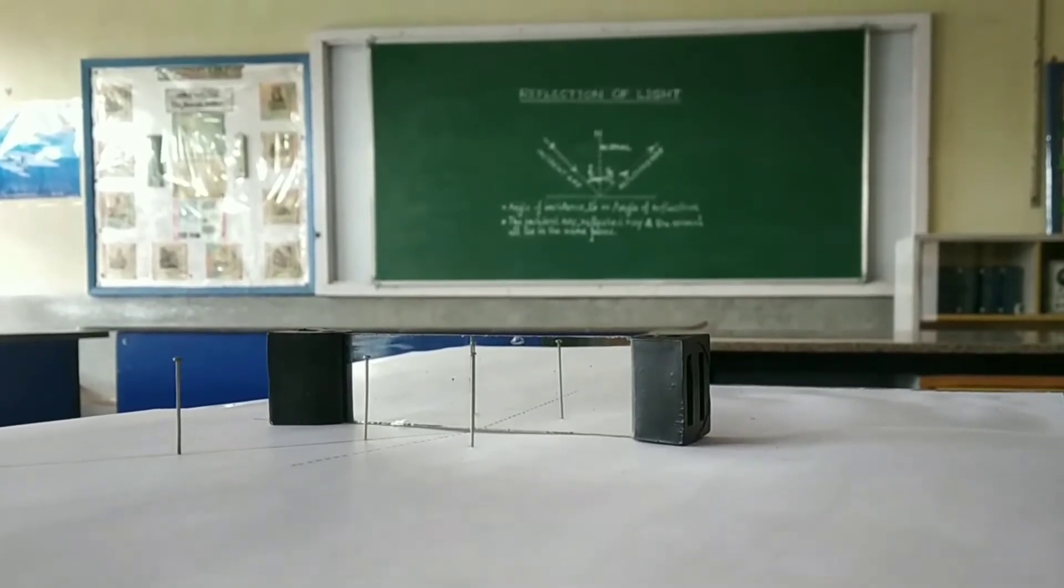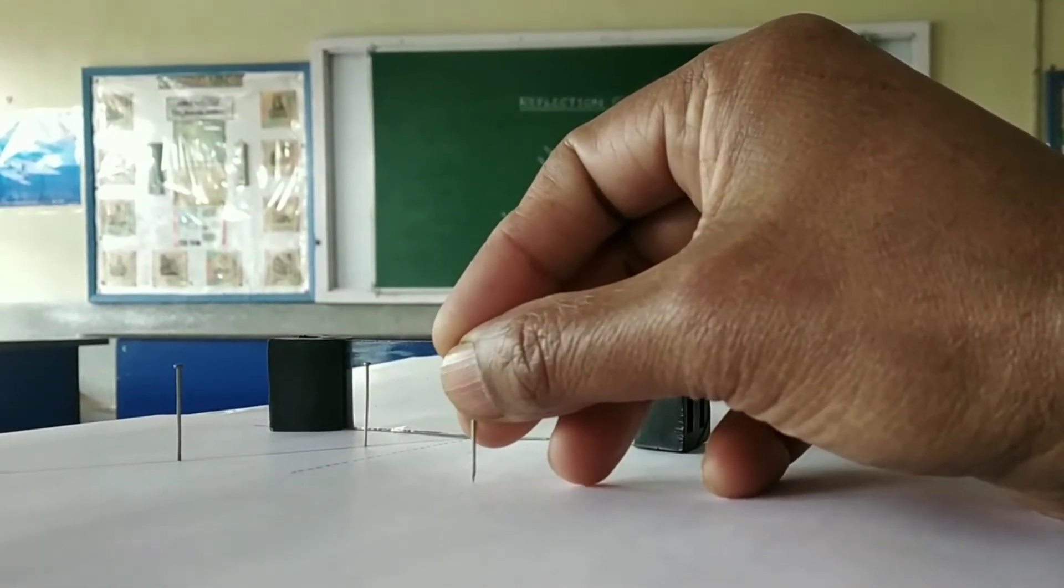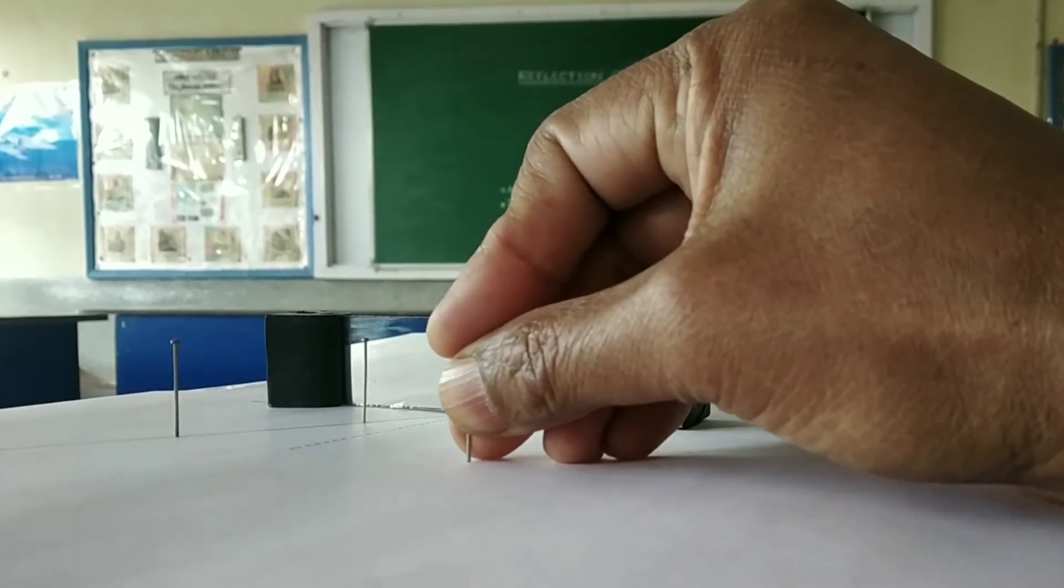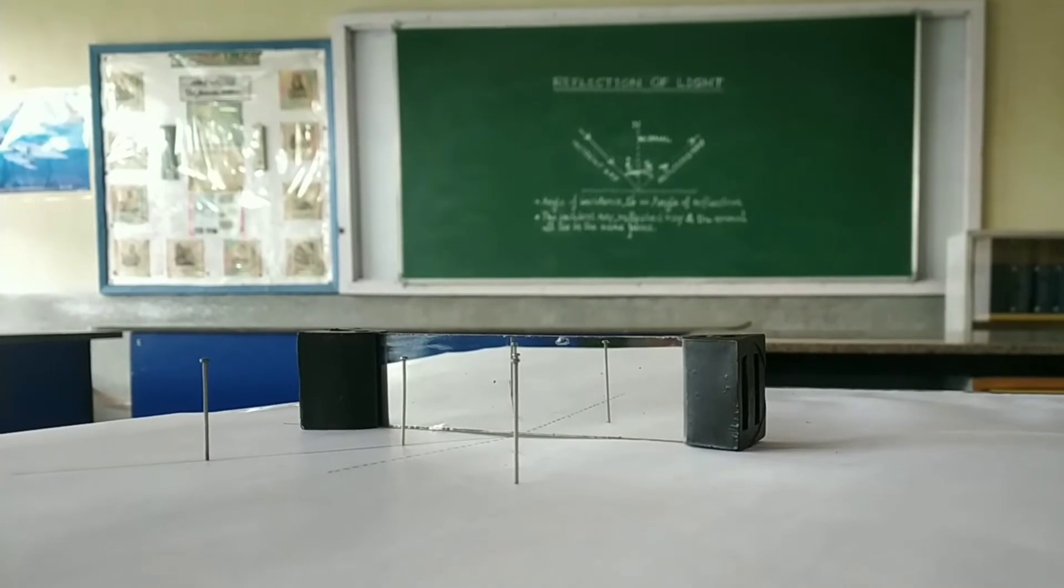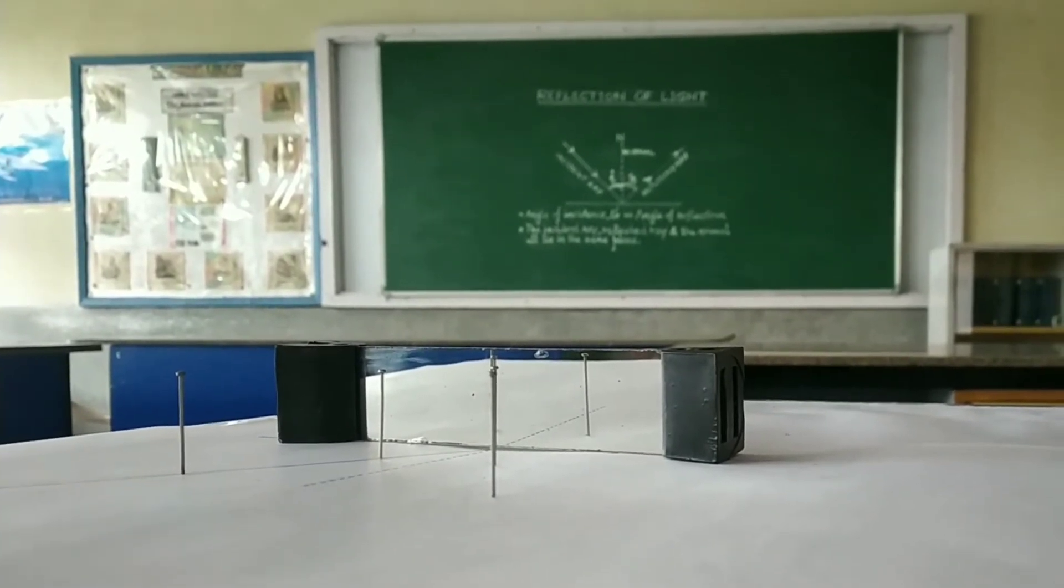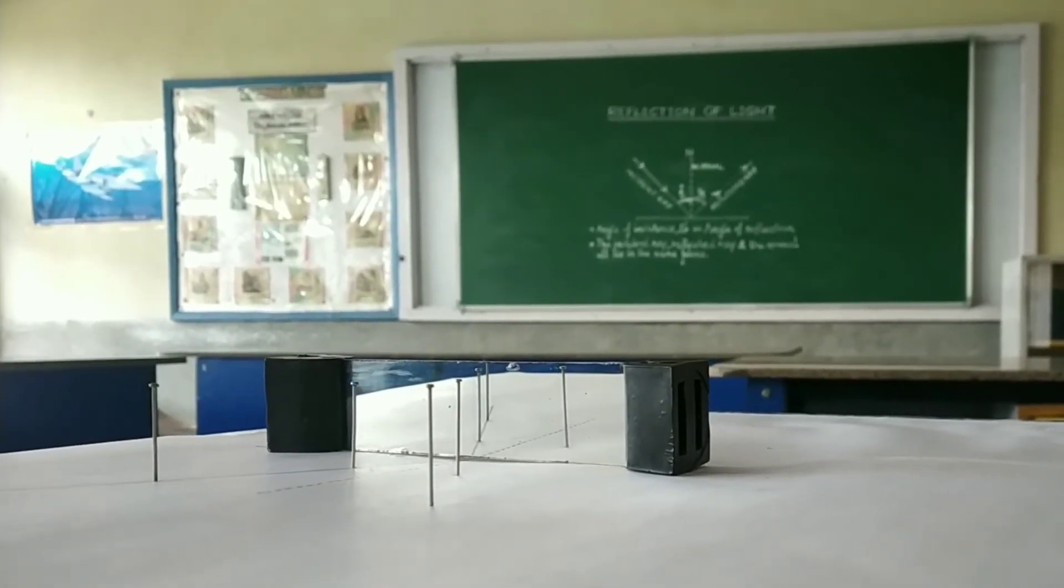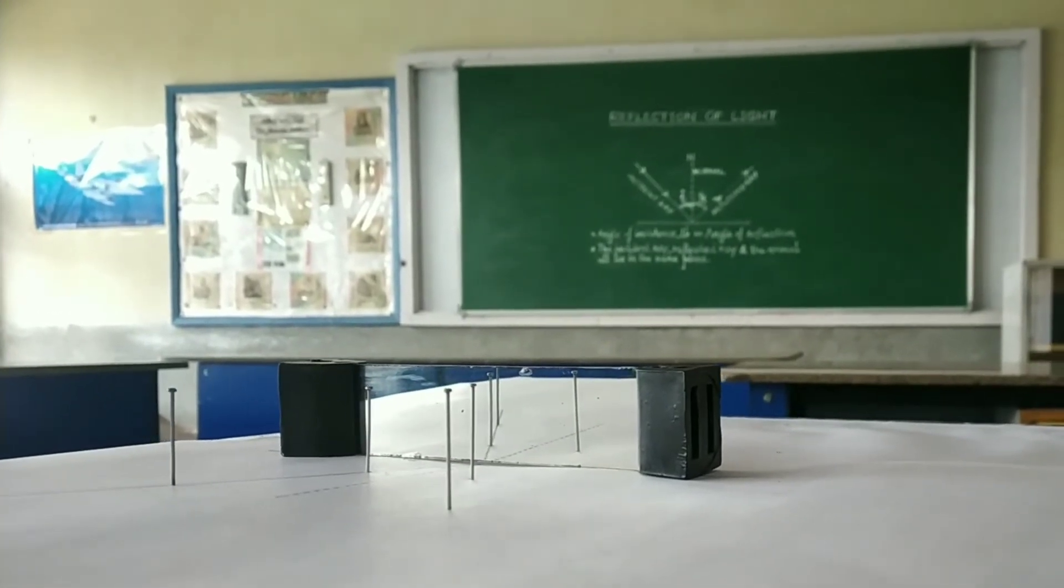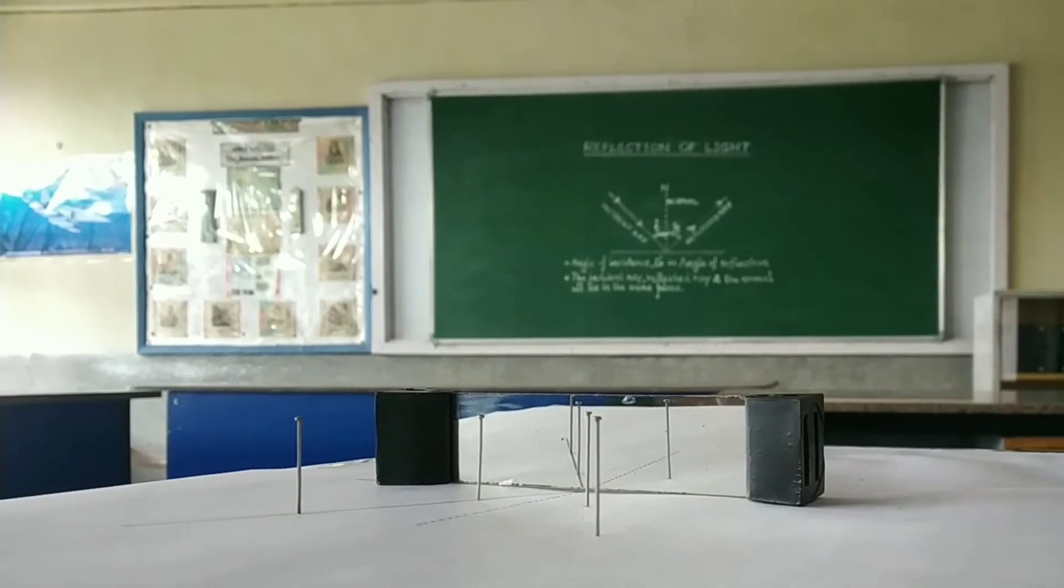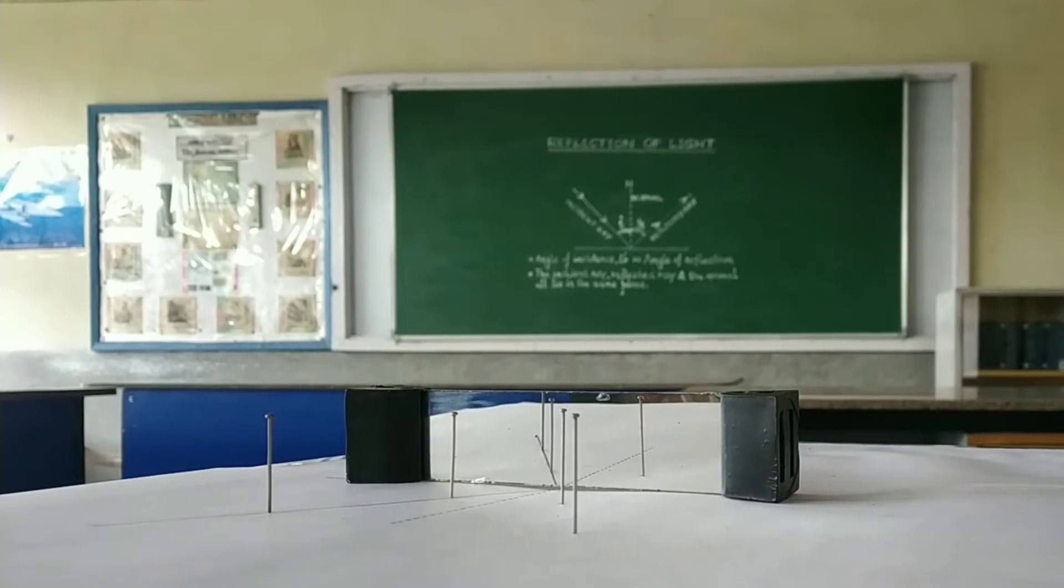In the very next step, we need to follow the same procedure and place a fourth pin again in such a manner that the feet of all the four pins, these two pins along with the feet of the images of the two pins on the incident ray all lie on the straight line. And by sidewise movement of the eyes, we can notice that there can be only one unique position where all the four pins appear to be lying on the same straight line.